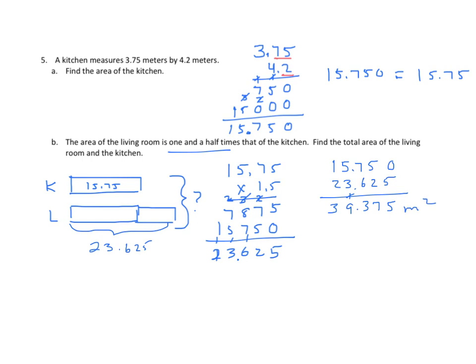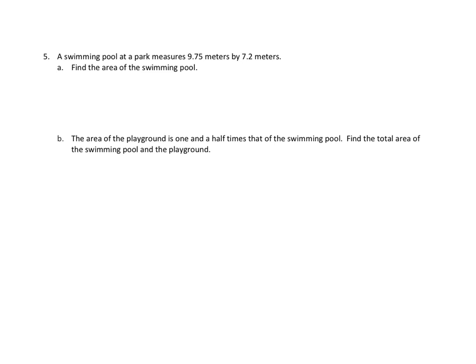Let's look at the homework. Again, we're finding area. We have the area of a swimming pool this time, and again we have a playground that is one and a half times that of the swimming pool. Find the total area of the swimming pool and the playground. Well, that's really almost identical to the previous problem, so you can refer back to that. First, we need to find the area of the swimming pool. Then we need to find the area of the playground. And then we need to find the sum of the two.